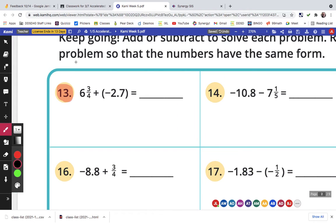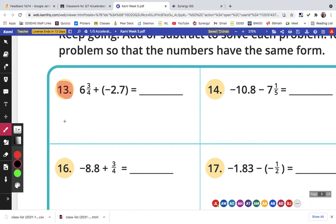And the last one that was requested was 6 and 3/4, which I'm going to change to 6.75 minus 2.7. So I'm just going to line up the decimals. Plus a negative 2.7. I'm going to find the difference.